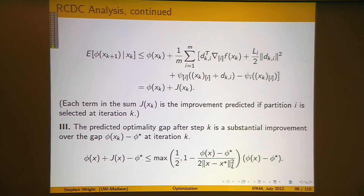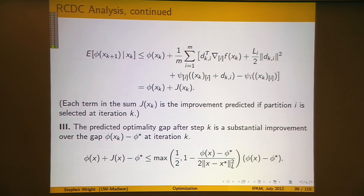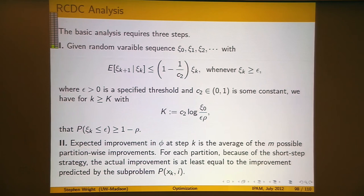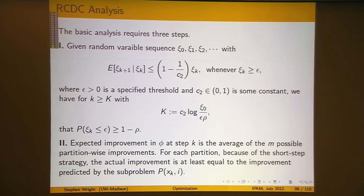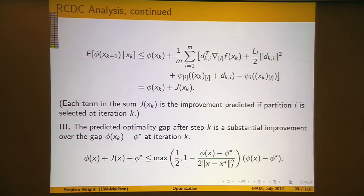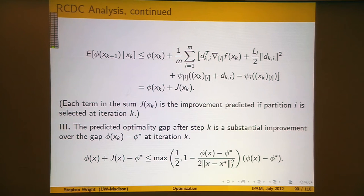It's easy to see how all this comes together: one step tells you how much improvement you're predicting to make; another tells you the expected improvement in the actual function is at least equal to the predicted improvement. Gluing these pieces together gives something that looks like the first lemma — you expect to decrease phi by at least a certain multiple at every step. That multiple is bounded away from zero because the analysis takes place when the optimality gap is greater than epsilon, guaranteeing the reduction factor at each iteration is strictly less than one.